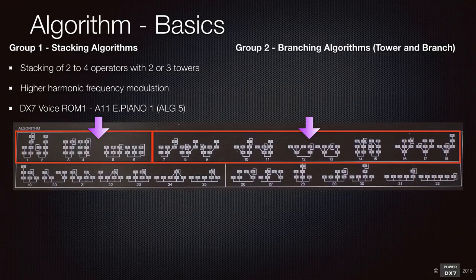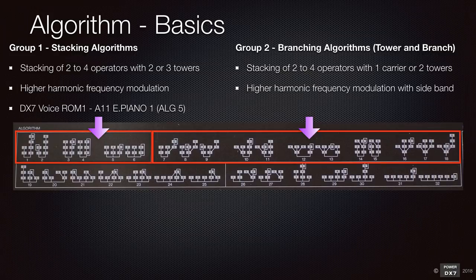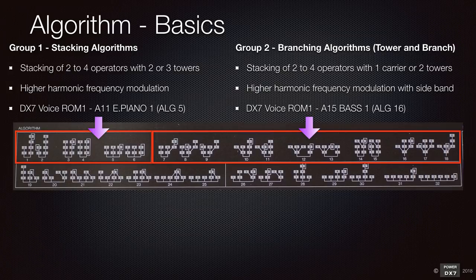The second group is branching algorithms. You have two to four operator stacking with one carrier or two towers. You can get higher harmonic frequency modulation as well. With branching, you can introduce a sideband of various harmonics and enharmonics to make the DX7 sound rich. The best example is the famous DX7 Bass One that was used in so many 80s songs. It has a sharp and harmonic-rich metal tone, as well as a rich sideband, to create the unique DX7 bass sound.